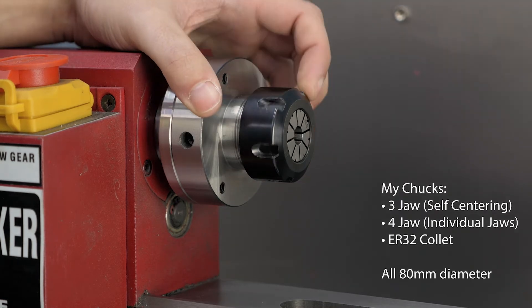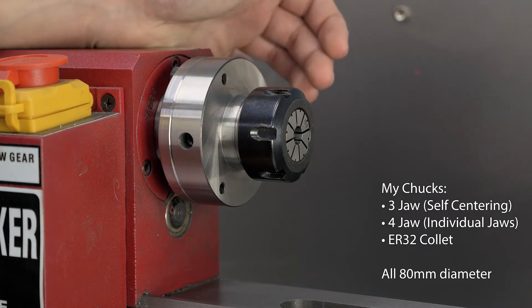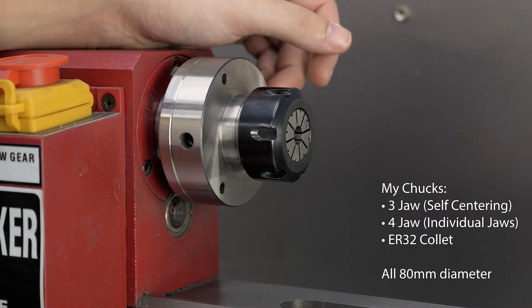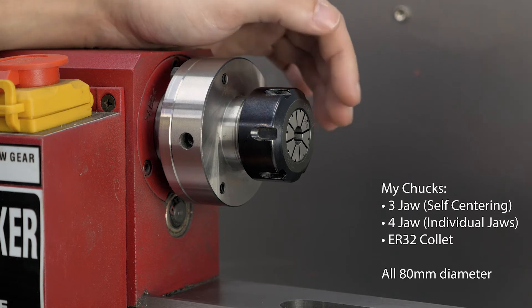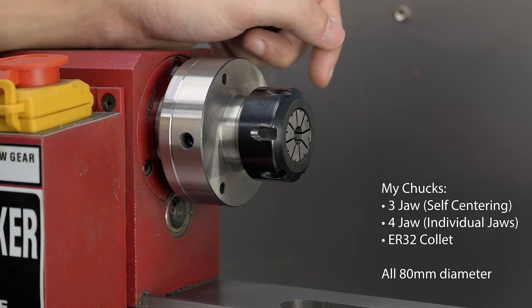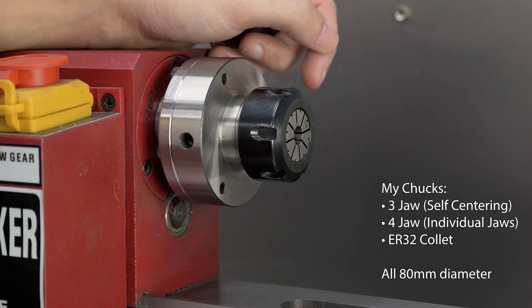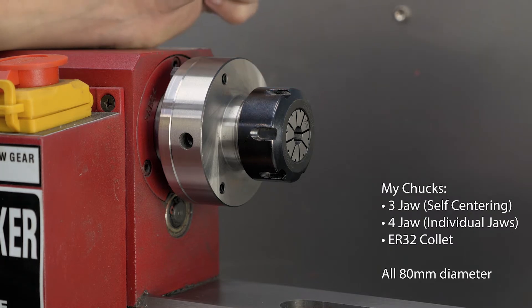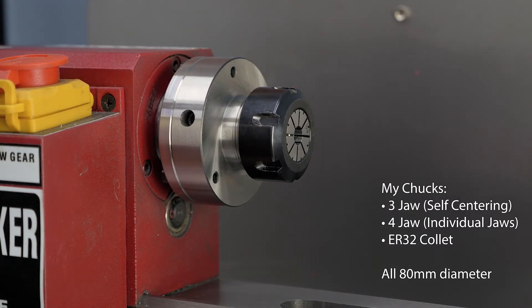At the moment I have a collet chuck installed on the machine, and that's for a good reason. Because most of the things I make on the lathe are in small diameter, it's just convenient to have it locked down in a collet instead of a three-jaw or a four-jaw chuck. Usually the three-jaw chuck is also convenient, but the one that came with the machine was in really bad condition. So it had quite a bit of run out. That's why I chose this one, and 90% of the time I have this one installed on the machine.